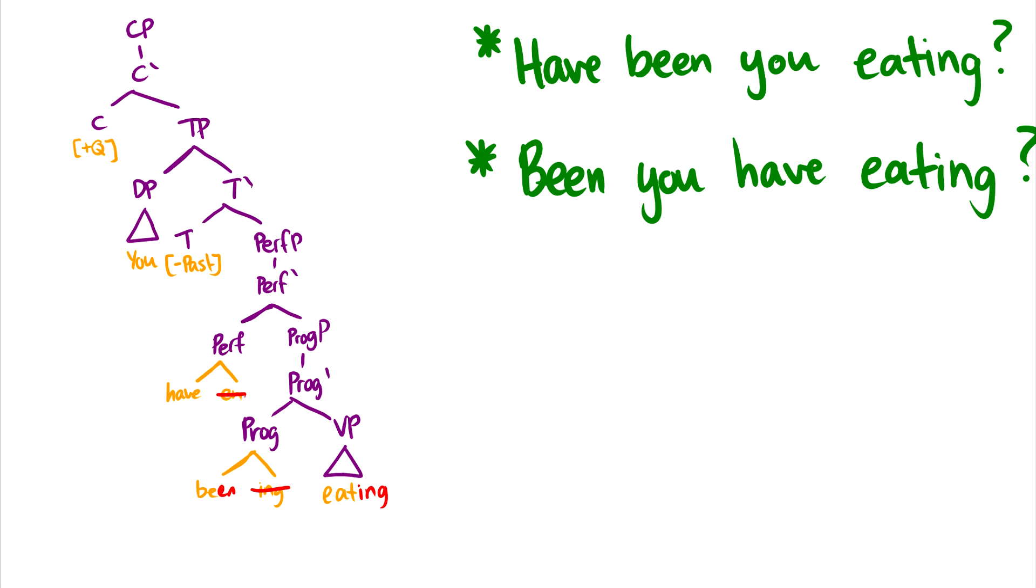Then the question is, why can't we do 'being you have eating'? Well, if we did that, that would mean that this 'being' is skipping over the perfect phrase, going up to T, and then moving up to C. But what we haven't really discussed yet is that we really want to pull the closest thing up to T. We can't just pull any verb phrase that comes after T up to T. We have to pull the closest one up to T. And that is why we cannot pull 'being' up. Instead, because 'have' is closer to T, we have to take 'have,' move it up to T first, and then move the remaining thing up to T. And then we get the word order 'have you been eating?' And then that's a correct sentence.